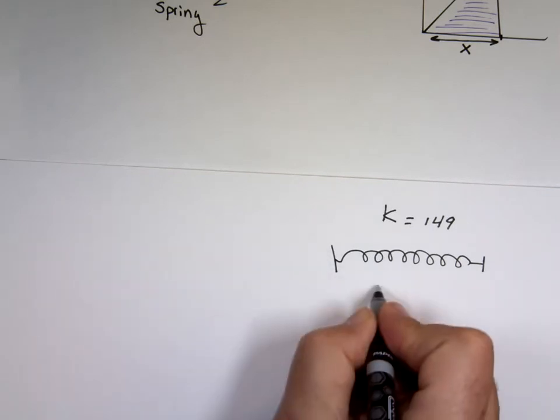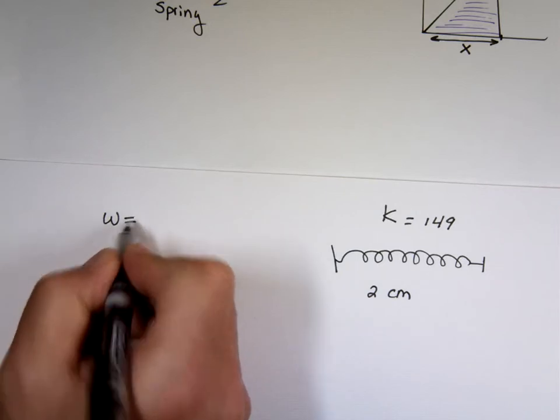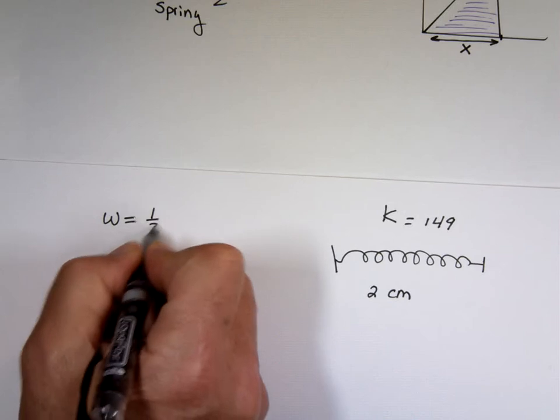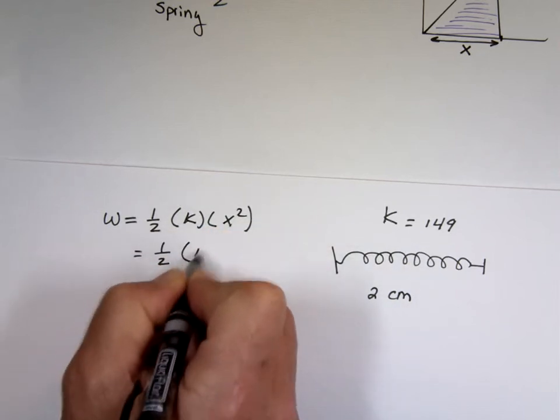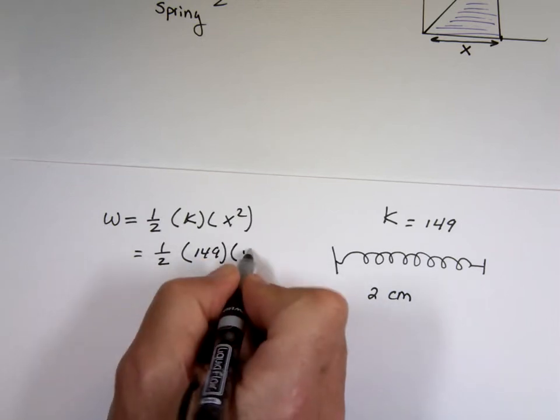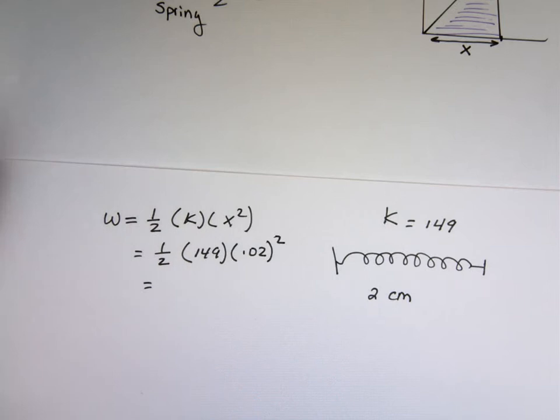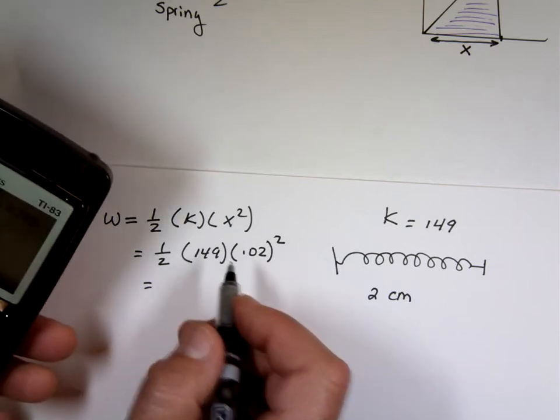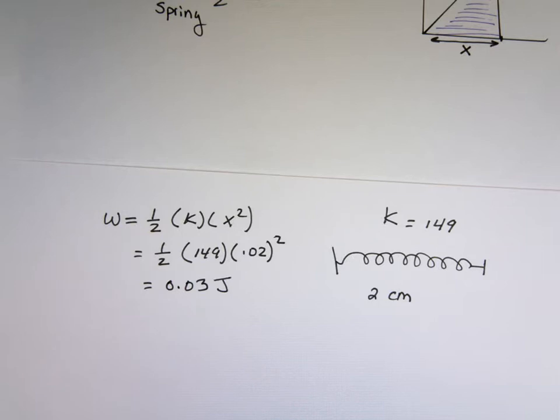If I compress that by two centimeters, then the amount of energy in that, the work will be done. If I release, if I make a toy out of it, like a bow and arrow or a BB gun, you compress it there. How much energy is going to be one half times k, which is, I'll just put that equation first. That would be one half, k is 149, and x squared, x is 0.02 meters, that's two centimeters squared. I got 0.03 joules.